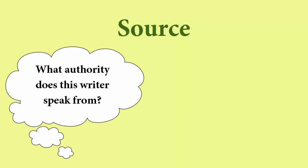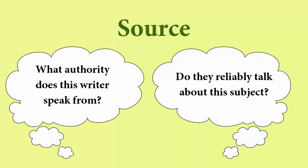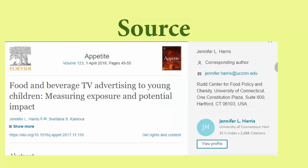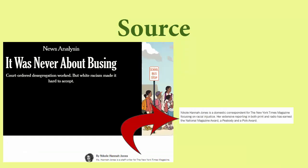For source, you want to consider the author's authority over the subject matter and how reliably they have written about it in the past. For scholarly articles, the author's expertise should be listed somewhere in the article. In other words, what their field is, and where they are a professor, or what organization they work with. For popular articles, there may be a bio for the author, or you may have to find the writer's personal website to see what they have published and in what field.